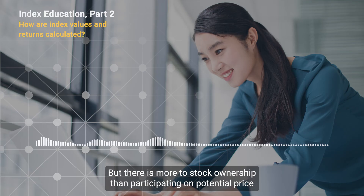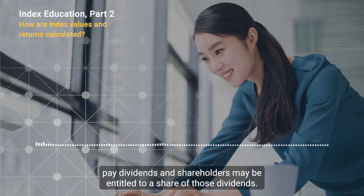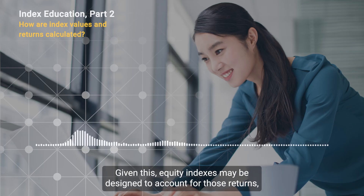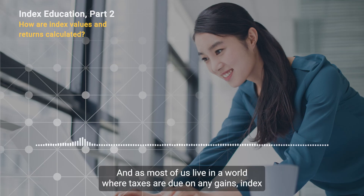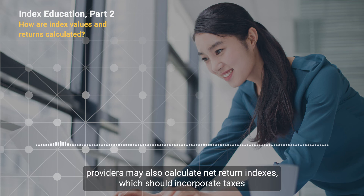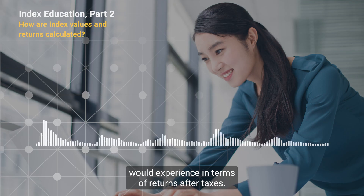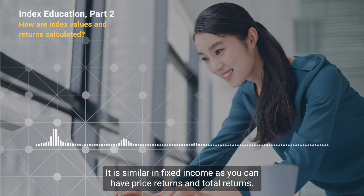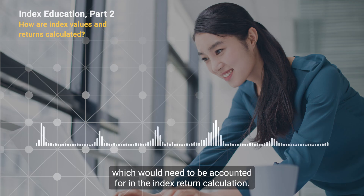There is more to stock ownership than participating in potential price appreciation, as companies pay dividends, and shareholders may be entitled to a share of those dividends. Given this, equity indexes may be designed to account for those returns, which should lead to the calculation of total return indexes. And as most of us live in a world where taxes are due on any gains, index providers may also calculate net return indexes, which would incorporate taxes to allow for a closer representation of what an institutional investor would experience in terms of returns after taxes. It is similar in fixed income, as you can have price returns and total returns. Bonds don't pay dividends, but they may pay coupons to investors, which would need to be accounted for in the index return calculation.